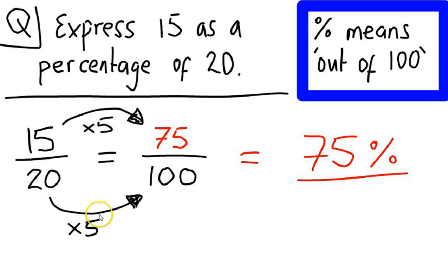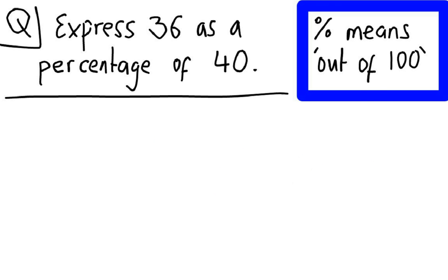Now what we've done here is 20 goes nicely into 100. Now that won't always happen. And that's what I'm going to do for the next example. So if we take a look at my next question here, and I've changed the question. It says, express 36 as a percentage of 40. So once again, we're looking to make it out of 100. So as before, the first thing I'm going to do is write my fraction. So, 36 out of 40.